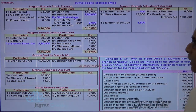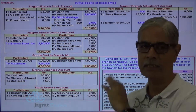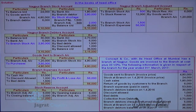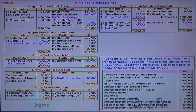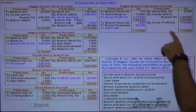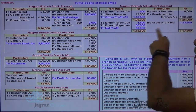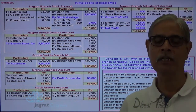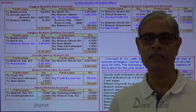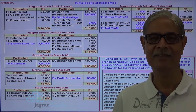Goods sent to branch account balance is transferred to purchase account or trading account. Expense account is transferred to profit and loss account — the lower part. The stock reserve account tallies. The upper part gives you the gross profit, which is transferred to profit and loss account — the lower part. The net profit is then transferred to the general profit and loss account. Branch adjustment account debit 56,000 to general profit and loss account credit 56,000. This is how the sum gets solved.